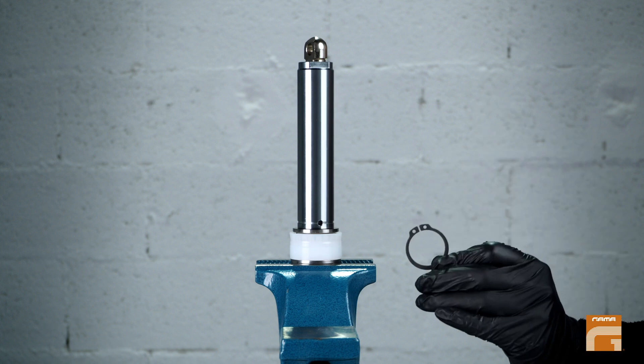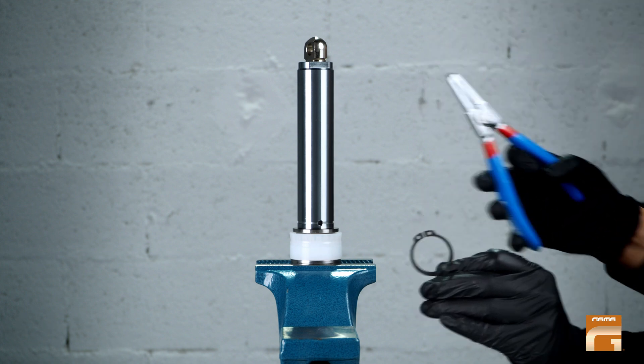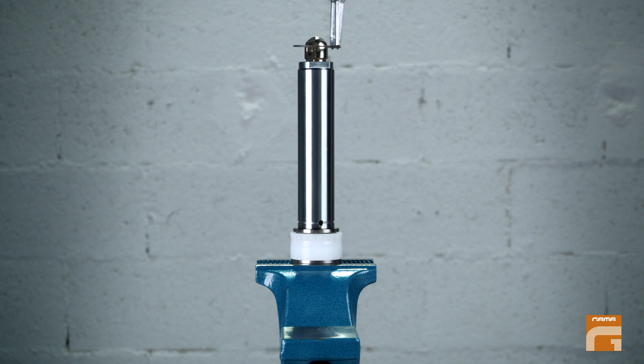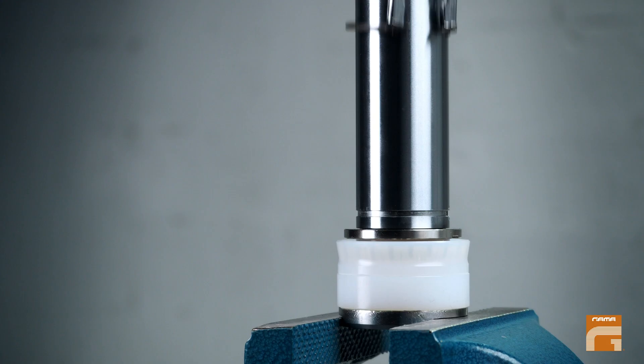Using a special circlip removal tool, put the circlip on the shaft. Now your piston is ready.